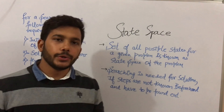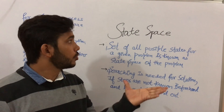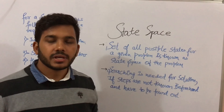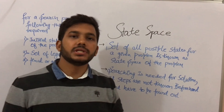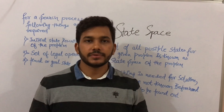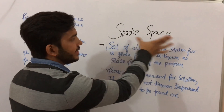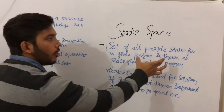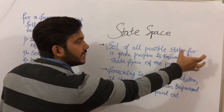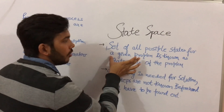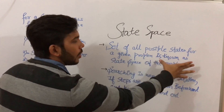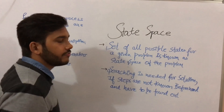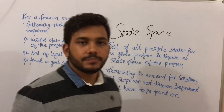Hi guys, in this video I am going to talk about state space in artificial intelligence. So what is a state space? The set of all possible states for a given problem is known as the state space of the problem.